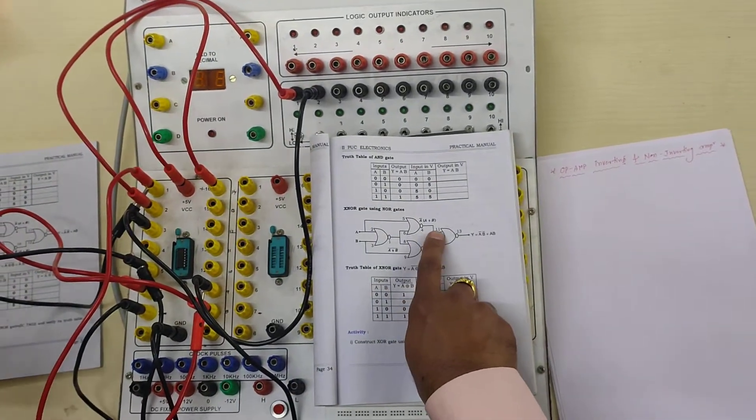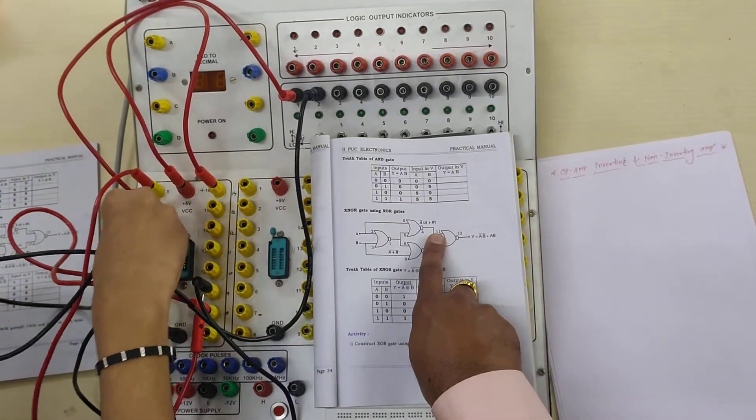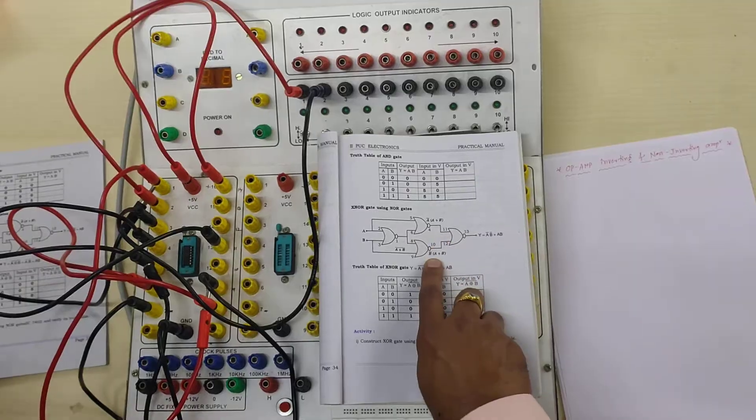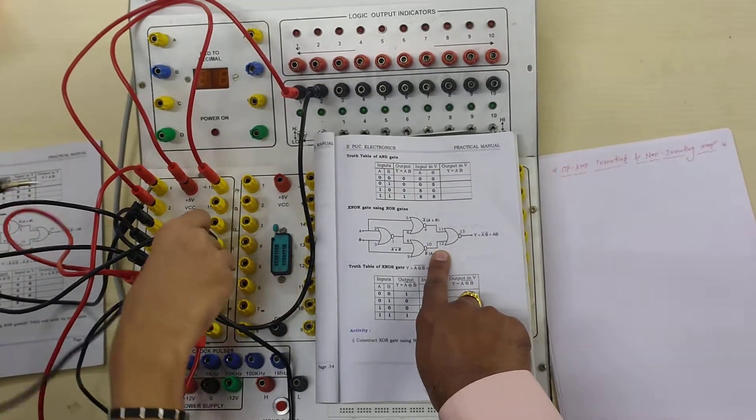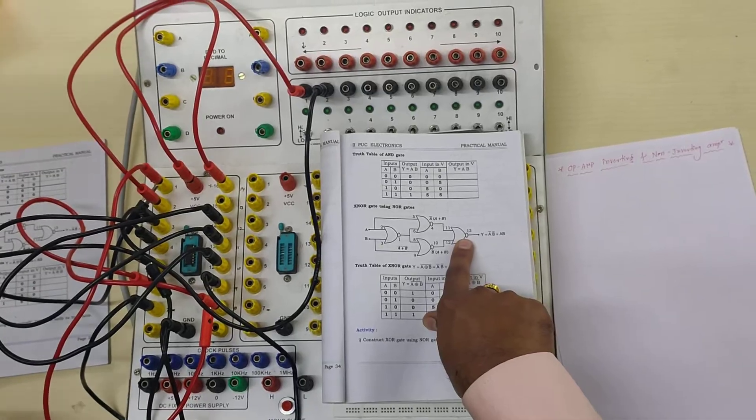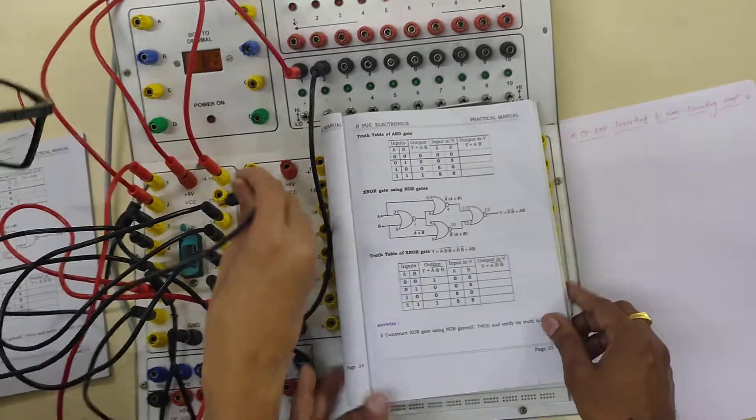Now, you connect from 4 to 11. 4 to 11. 11 where it is? This is 8, 9, 10, 11. Very good. And then 10 to 12. 10 to 12. Excellent. Finally, what it is? 13 is finally the output.